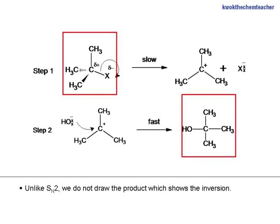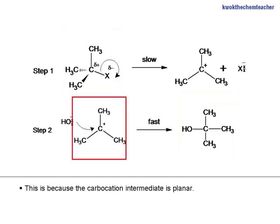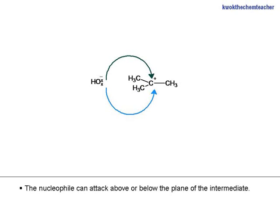Unlike SN2, we do not draw the product to show the inversion. This is because the carbocation intermediate is planar. The nucleophile can attack above or below the plane of the intermediate.